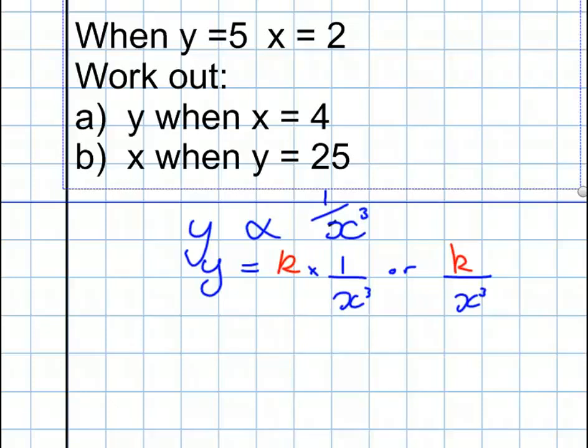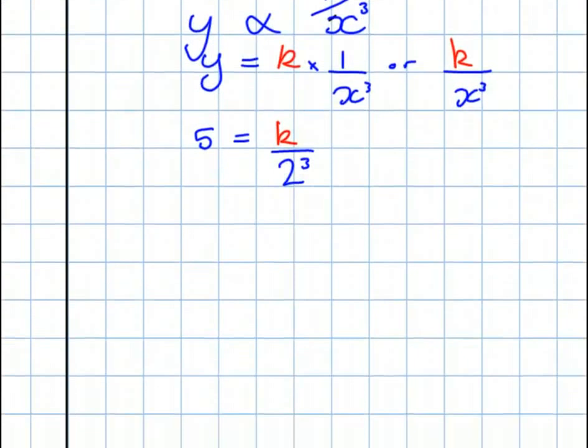When Y is 5, X is 2. So we replace Y with 5. 5 is equal to K over X cubed. Now, let's get rid of that 8, that denominator here. We're going to multiply the whole equation by 8 and we get 40 is equal to K. K divided by 8 times 8 is K. So now we have the value of K.